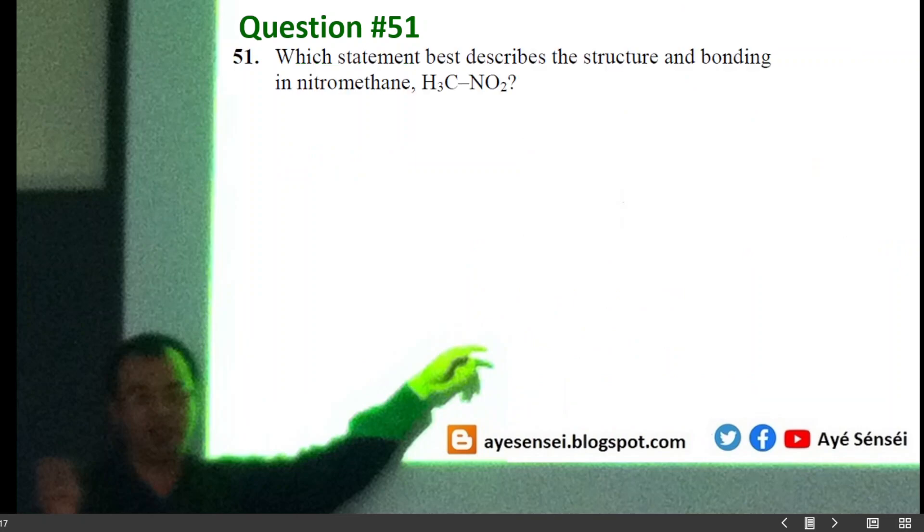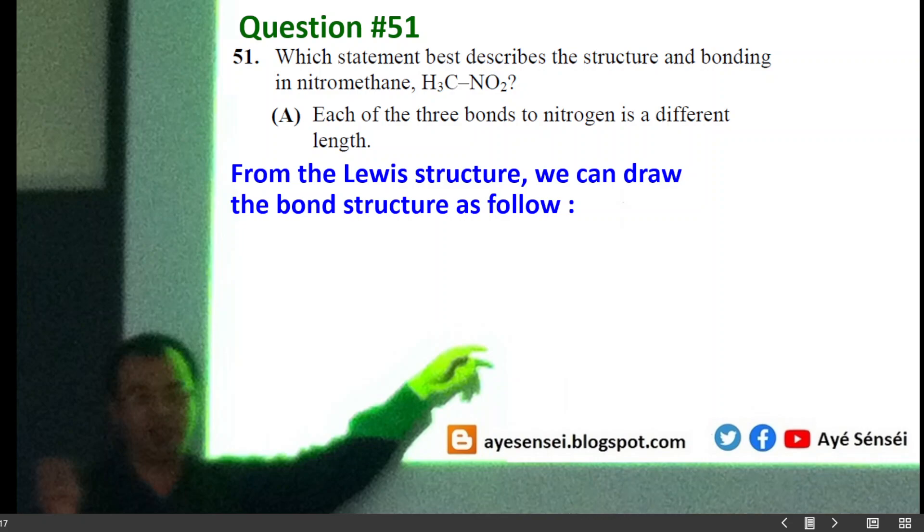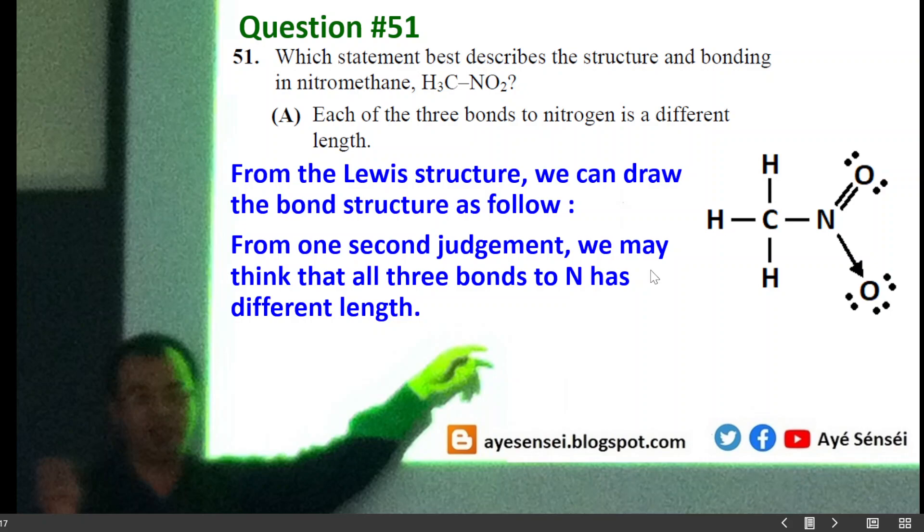Next, question 51: which statement describes the structure and bonding in nitromethane? Each of three bonds to nitrogen is a different length. So first, let's draw the structure. So this is the 2D structure. From the structure you can see that this is connected with a single bond, and then this is double bond, and then this is a coordinative one. So it seems that since they are consisting of three different bonds, then all the three bonds should have a different length.